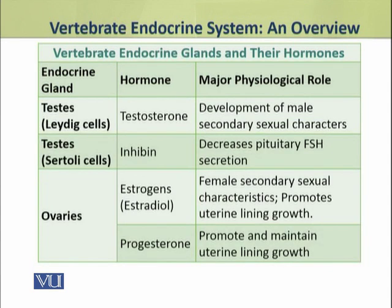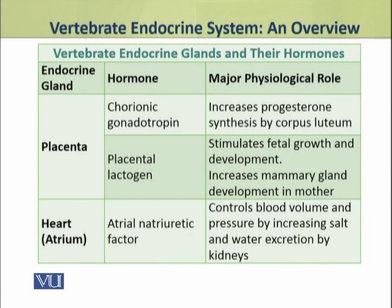Dear students, the gonads, in addition to producing gametes, also act as endocrine tissues. The testes produce two types of hormones — testosterone and inhibin — from two types of glandular cells: Leydig cells and Sertoli cells. The ovaries produce two major hormones in females. These are estrogens — the major estrogen being estradiol — and progesterone.